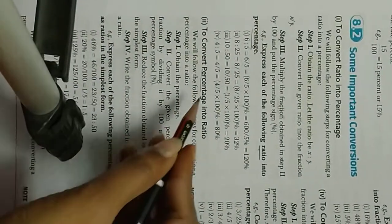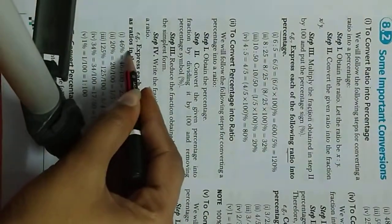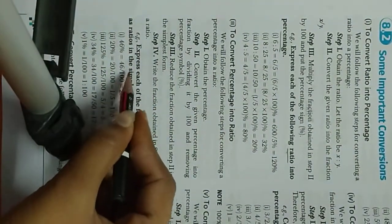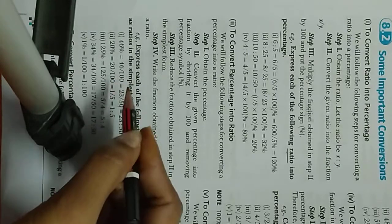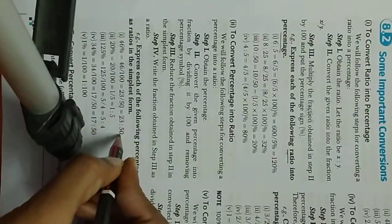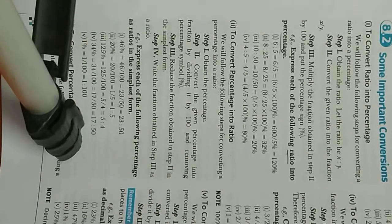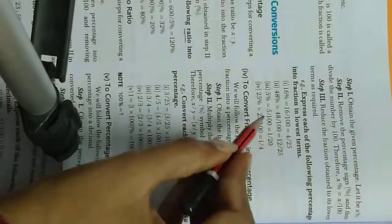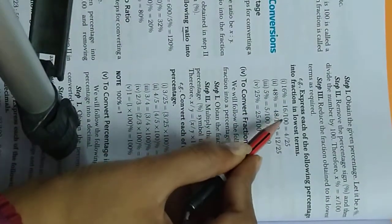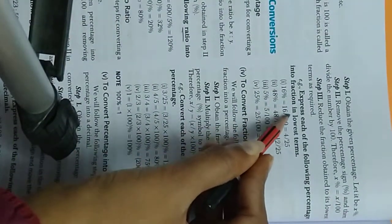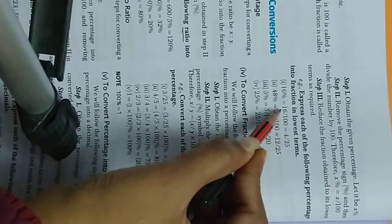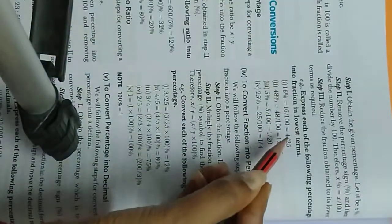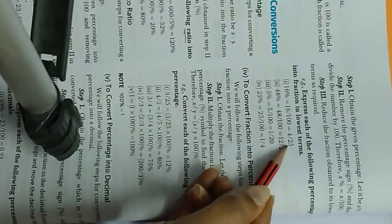Isi tarah se jab percentage ko ratio mein convert kiya jata hai — to 46% hai, to usko fraction mein convert karte hai, denominator mein hundred write karte hai, or phir simplest form mein cutting karne ke baad joh answer aata hai, wo ratio ho jata hai. And to convert percentage into fraction: like 16%, fraction mein write karenge 16 upon hundred, isko upon mein hi rakhenge, and cutting karke lowest terms mein answer aayega.